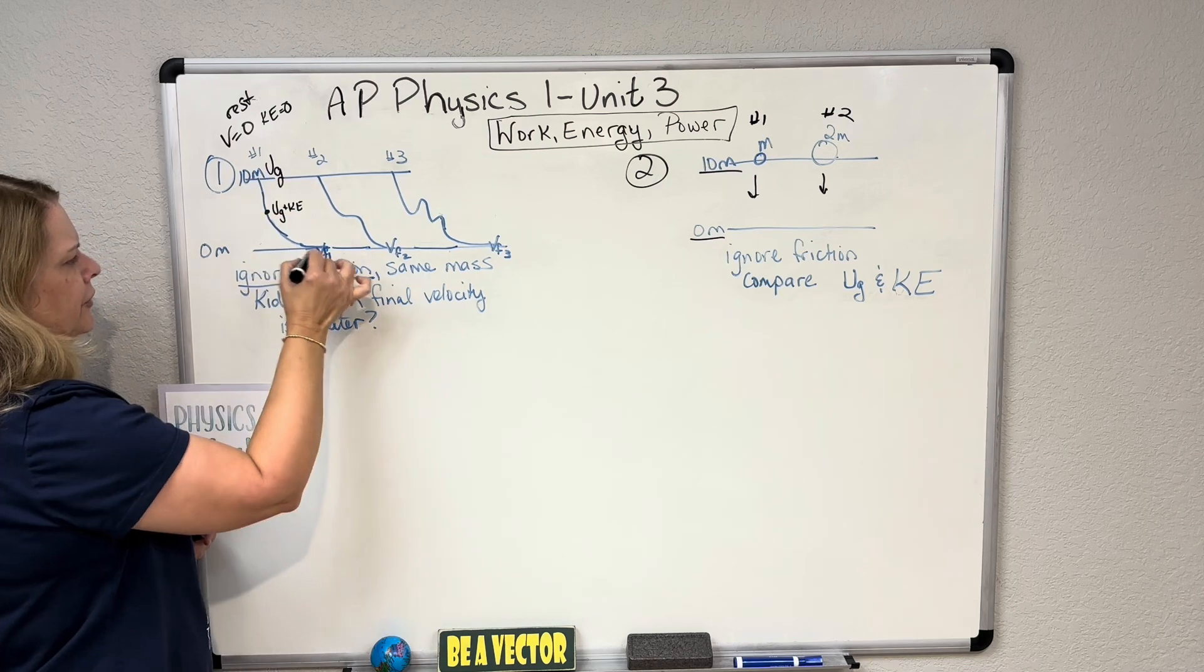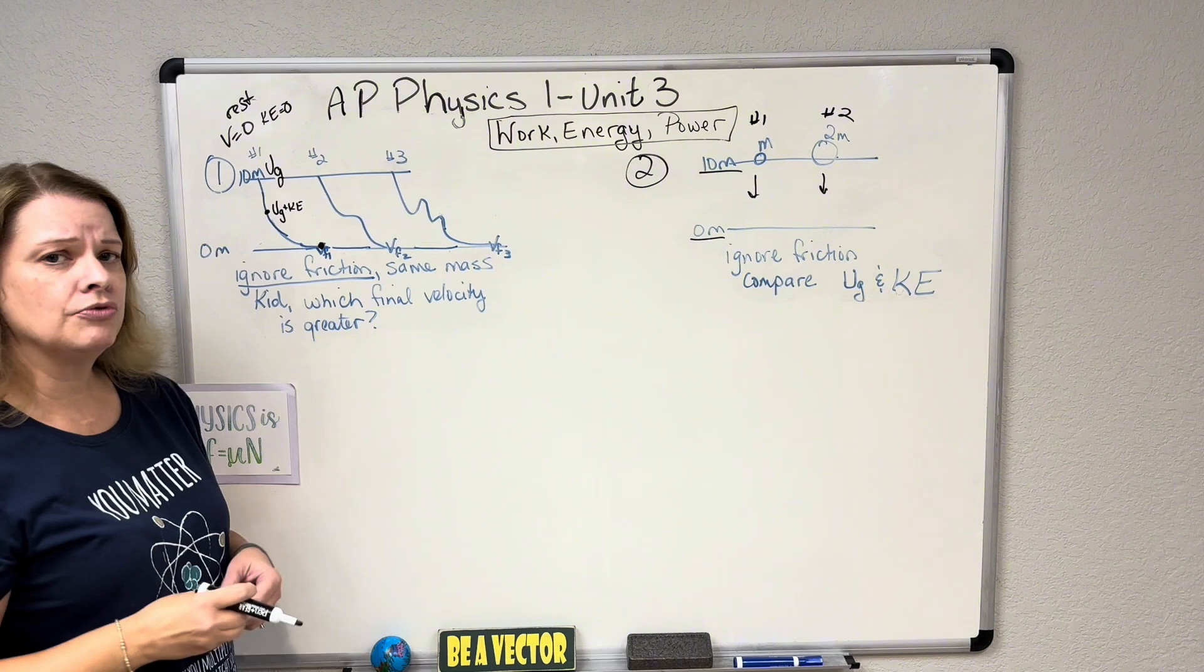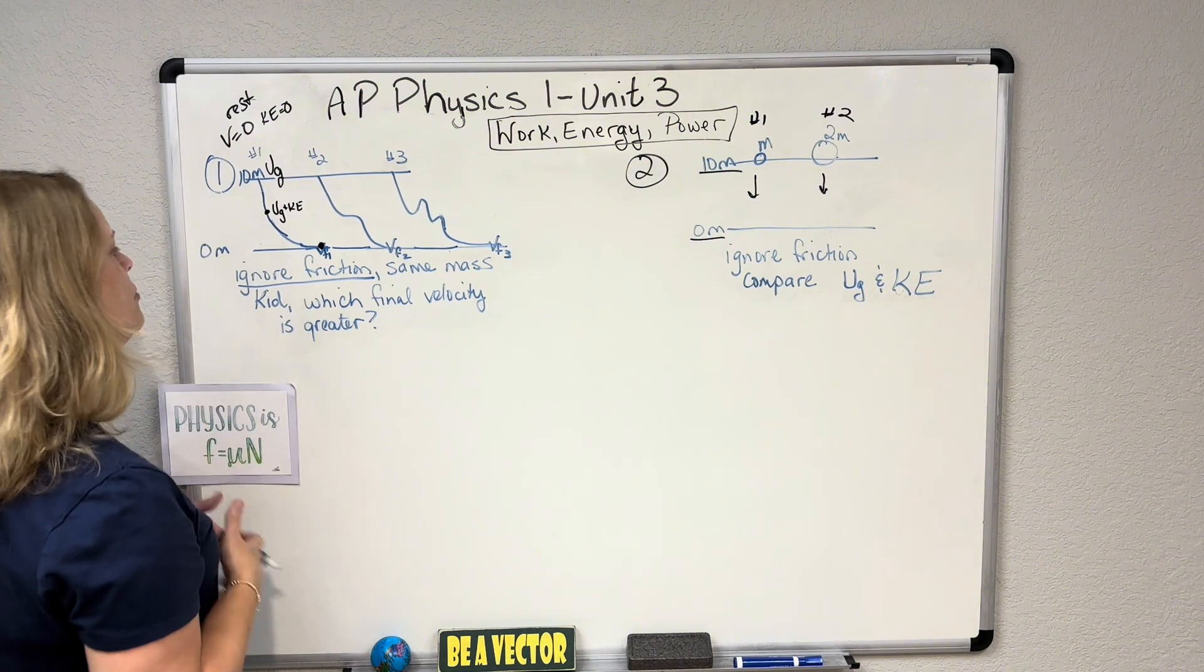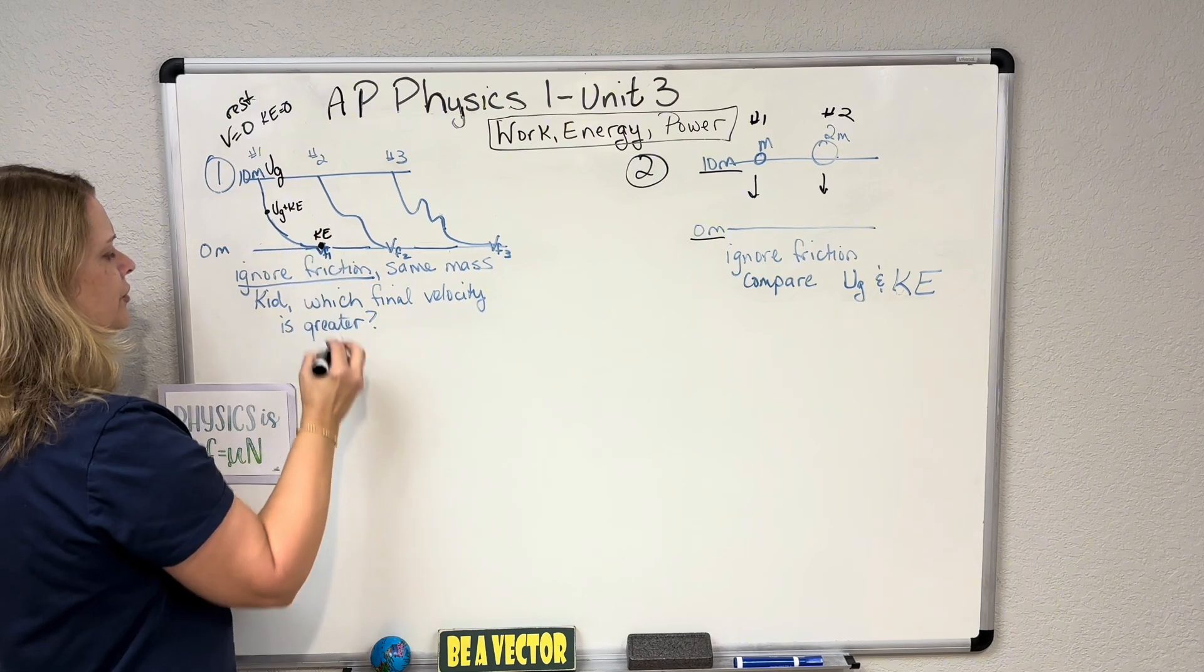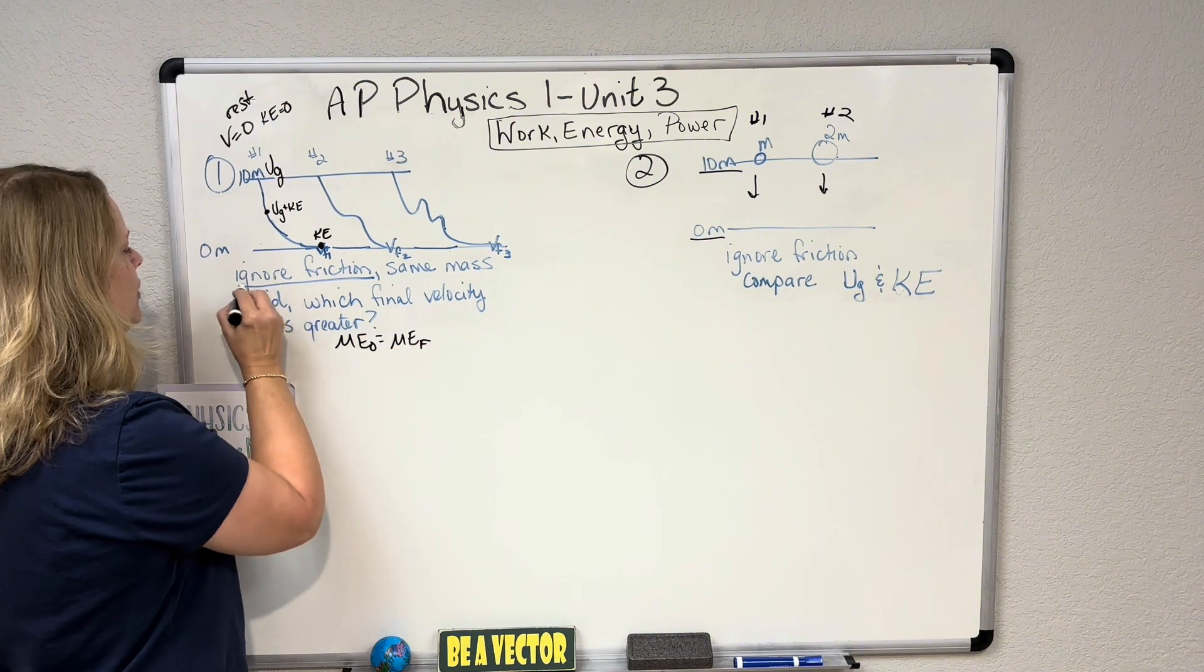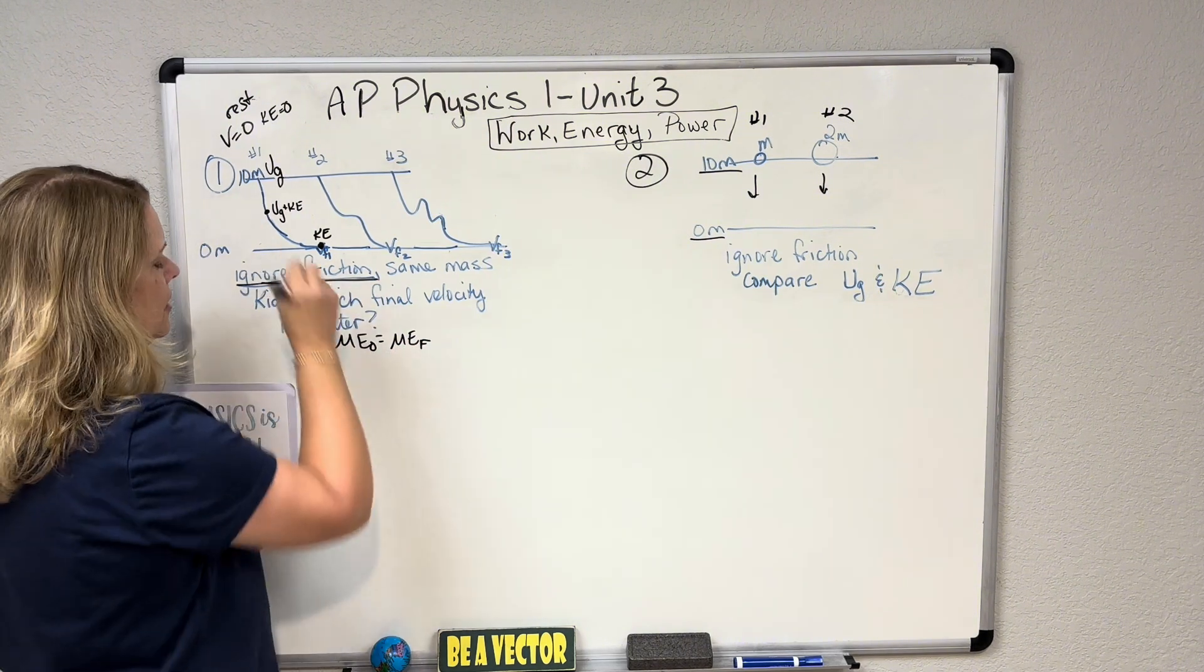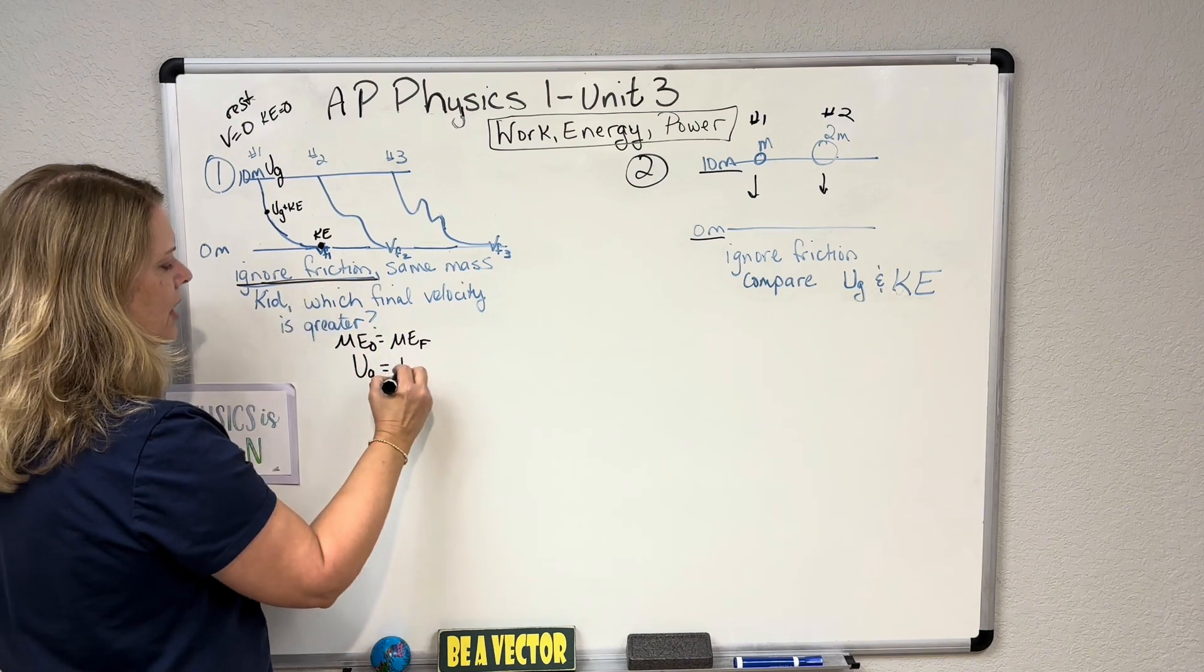But now we're looking down here. When we get to the bottom, we have no height, so no potential energy due to gravity. There's still no spring, so no spring potential energy. And we have velocity though, which means we have kinetic energy. So if we're doing our mechanical energy initial equals mechanical energy final and we get to ignore friction, that's a big statement.